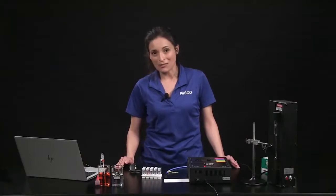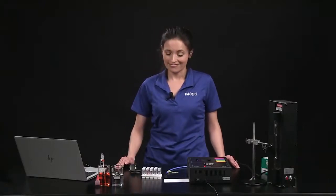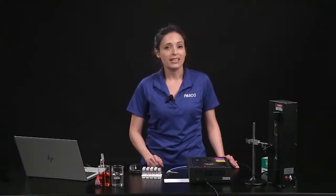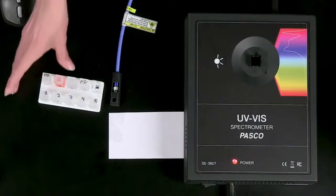You will need version 2.3 or newer of the free spectrometry app to use with the UV-VIS spectrometer. Download the latest version from PASCO.com. The spectrometer comes with 10 disposable semi-micro cuvettes usable down to 220 nanometers. The cuvettes come with lids and a cuvette holder.